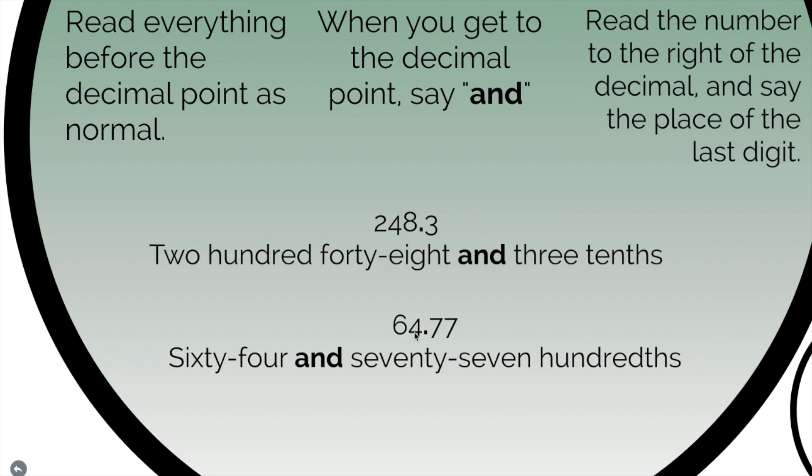And then for this one, again, I'm going to read everything like normal. That's to the left. 64. And then I'm going to read this like normal and say the place of the last digit. 77. And this seven right here is in the hundreds place. So 77 hundreds. The whole number. 64 and 77 hundreds.